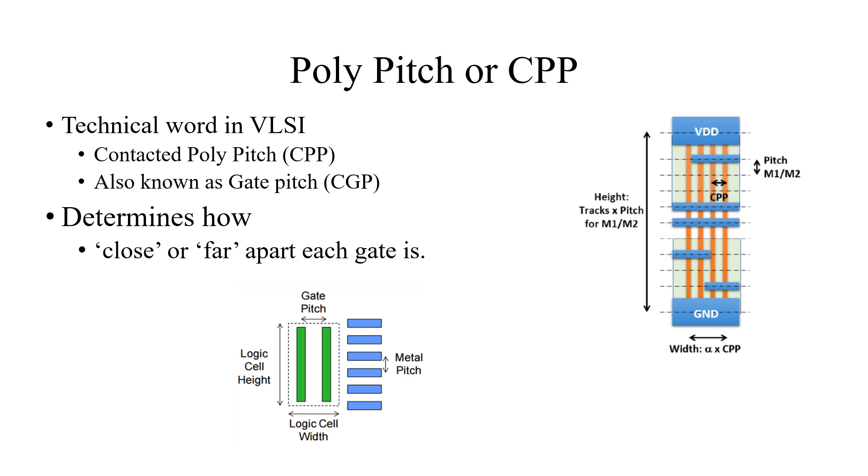Similarly, on the right side we have a diagram of a standard cell which shows metal pitch as well, M1/M2. It's the distance between two neighboring metal tracks on the same level. This decides the height of your standard cells.